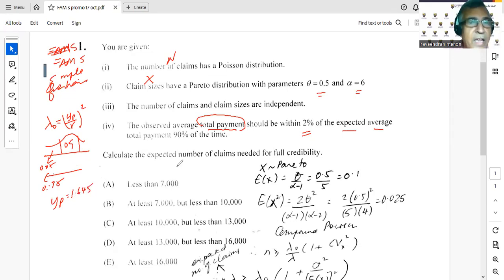r they gave me as 0.02, so we're done with this one. Now we can look at the question: calculate the expected number of claims needed for full credibility.